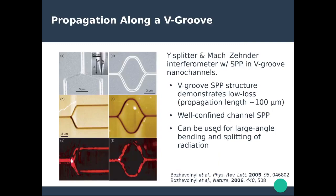Those v-grooves can be engineered in very specific ways. We can generate beam splitters and Mach-Zehnder interferometers with those v-grooves. These are micrograph and near-field images showing propagation of light along the different arms of the beam splitter or along the Mach-Zehnder interferometer. Those v-grooves sustain SPPs and are very low loss, allowing propagation over distances of the order of 100 micrometers. The SPPs are well confined inside the channel and can be used with very large angle bending and splitting with minimal loss.